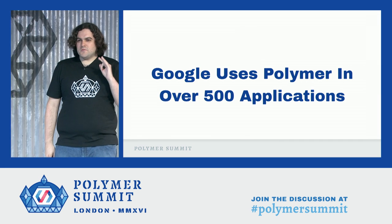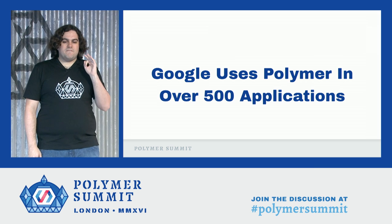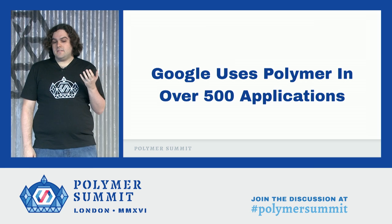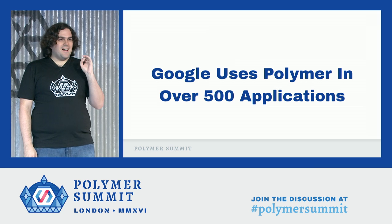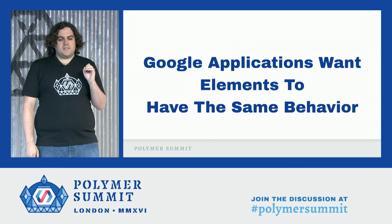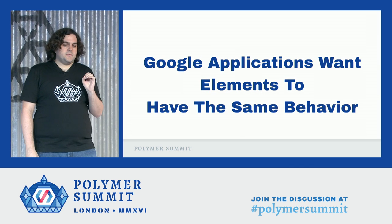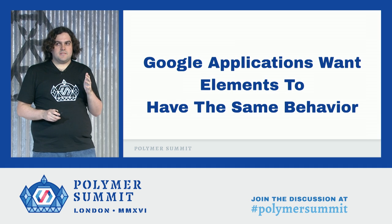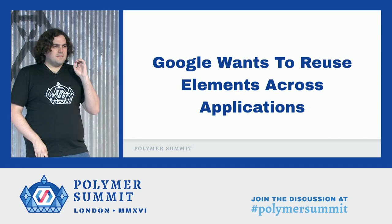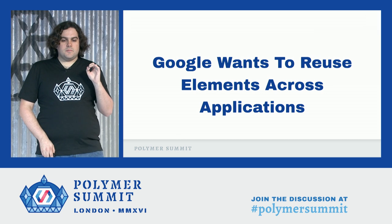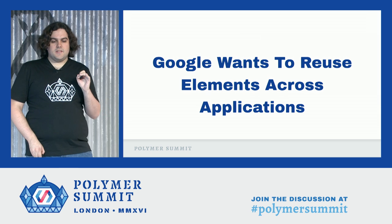Here's a real-life example. Google uses Polymer in over 500 applications. Some are public, some are not. But all of them have to pass a high bar of quality for their users. In these 500 applications, Google wants elements to have the same behavior — buttons, checkboxes, dialogs, sliders — everything should be consistent. This means that Google wants to reuse elements across applications so that application developers don't have to duplicate all the same behaviors.